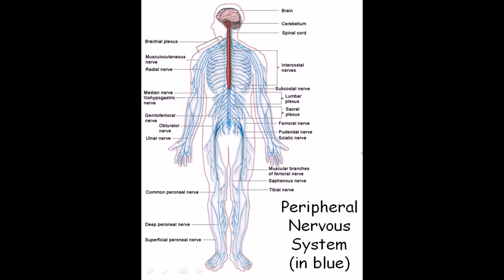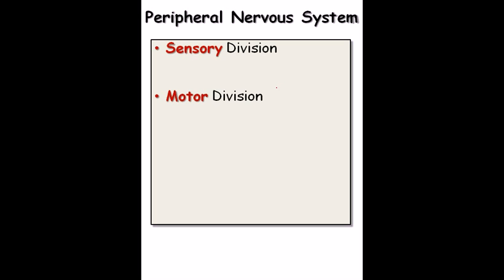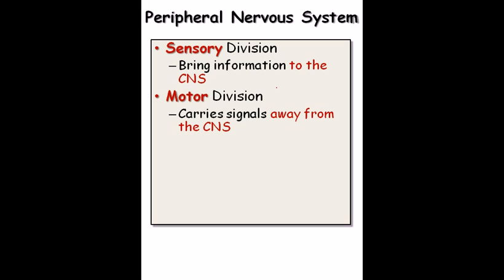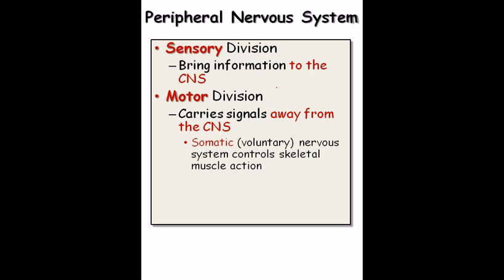We have talked about the central nervous system. Now there is the peripheral nervous system — the nervous system scattered all around the body. The peripheral nervous system is divided into two parts: the sensory division and the motor division. Just like in the reflex arc, the sensory division brings information to the central nervous system, gathering information from the hands, legs, face, and all other regions. The motor division carries signals away from the central nervous system.